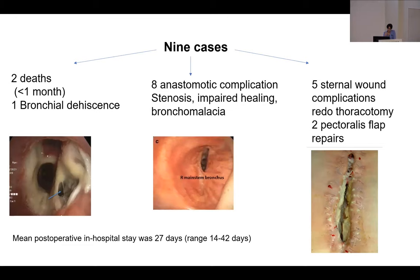Eight of the nine patients had anastomotic complications — infection around the anastomosis affecting wound healing, which can later progress into tight anastomotic stenosis, reduced lung function, and breathlessness, requiring recurrent bronchoscopies and balloon dilatation. Some end up with stents, which can cause further problems. In some cases with impaired healing, there can be very floppy anastomotic tissue called bronchomalacia, causing reduced lung function and breathlessness, with limited treatment options beyond CPAP or airway stenting.